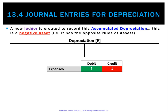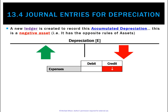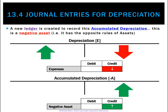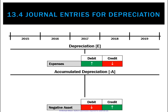We need another ledger to match depreciation entries. We create what's called accumulated depreciation, which is actually a negative asset — the only negative asset we deal with in this course. Because it's a negative asset, it has the exact opposite rules of a regular asset: it goes up on the credit side and down on the debit side.